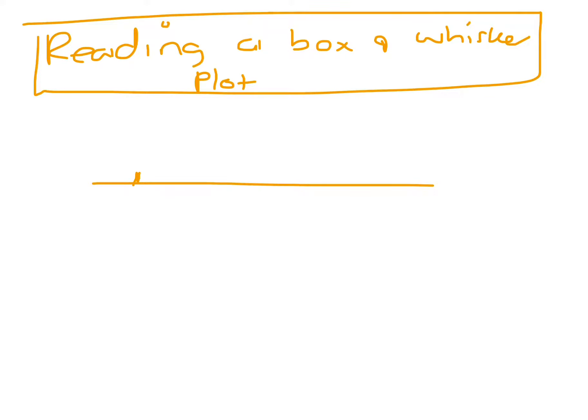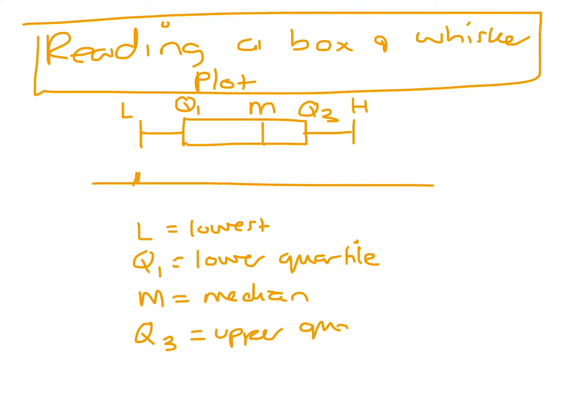Okay, so if you have your box and whisker plot, say it's drawn like this. We need to know that this is the lowest score, this is the highest score. This is Q1, this is M for the median, and Q3. So L is the lowest, Q1 is the lower quartile, Q3 is the upper quartile, and H is the highest score.